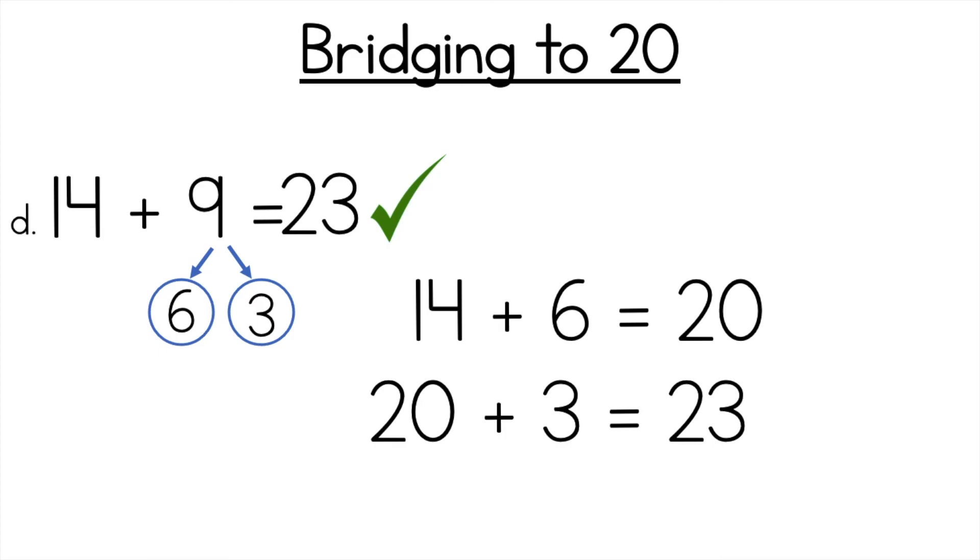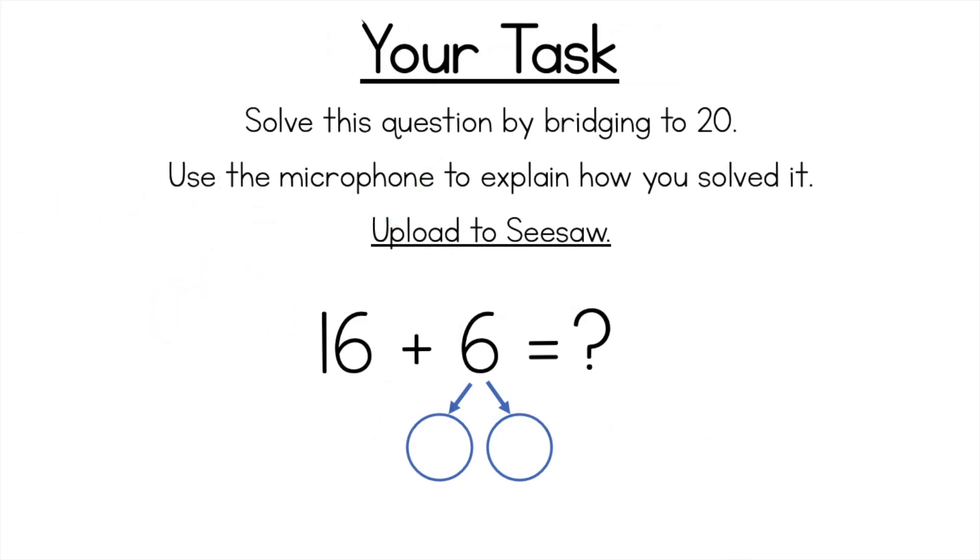So I hope you got all of those correct. If you didn't you can go back and you can change it. Now this is all you have to do. So once you've done those four questions and you've ticked it with me this is what you need to do. Solve this question by bridging to 20. So use the strategy that you just learned. Don't use the counting on or another one. Then you need to use the microphone on Seesaw to explain how you solved it and upload to Seesaw. Okay. So I've put the two circles here. You might want to draw it on a piece of paper and take a photo or you can do it here. But just like we did solve this question and then use the microphone to explain how you did it. And that's it. Good luck.